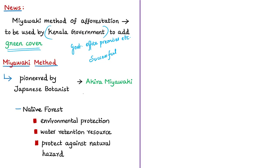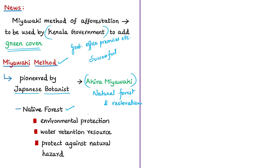The Miyawaki method was pioneered by Japanese botanist Akira Miyawaki, an expert in the study of natural forests and restoration of natural vegetation using traditional principles. Based on his expertise, he proposed a plan to restore native forests for environmental protection, as a water retention resource, and to protect against natural hazards.